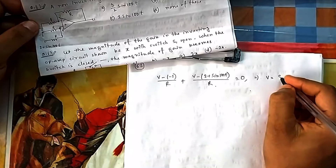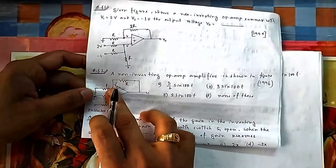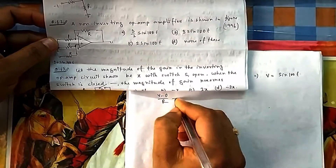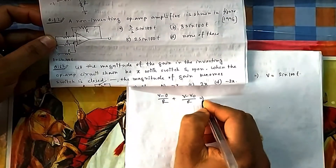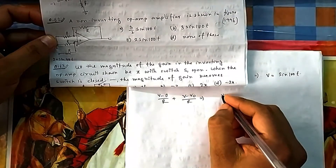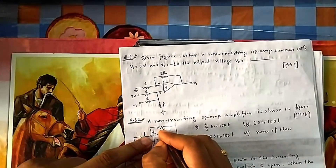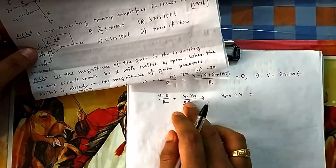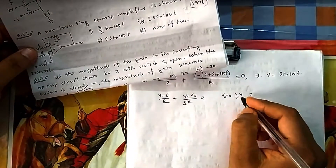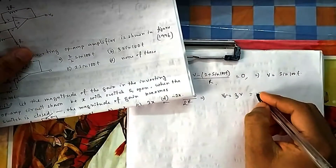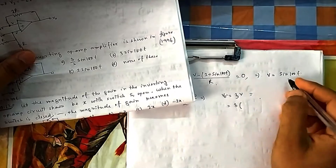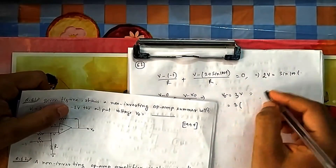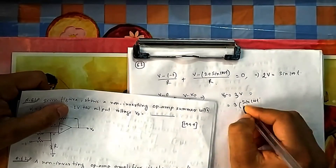Solving the nodal equation at V+, the constant 2 cancels and we get V = sin(100t)/2. Now taking nodal at V−: (V − 0)/R + (V − V0)/2R = 0, so V0 = 3V. Note: the feedback resistor is again 2R — please correct the question sheet.